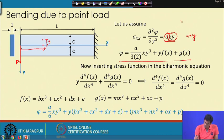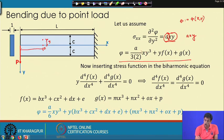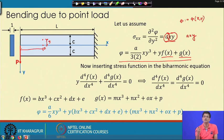Since φ is a function of x and y, integrating with respect to y gives φ = a/6·xy³ + y·f(x) + g(x), where the integration constants f(x) and g(x) are functions of x.